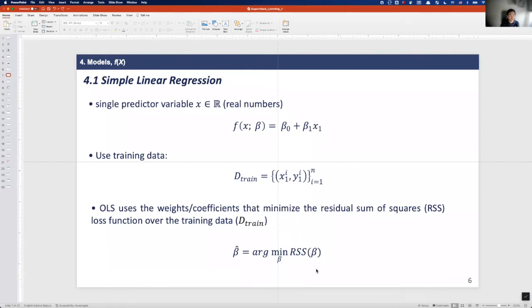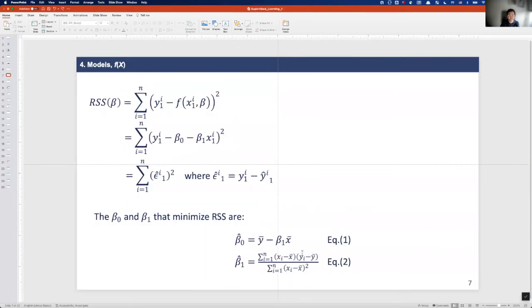This equation indicates finding the minimum value of the beta which minimizes the RSS. The parameters that minimize the residual sum of square, RSS, the loss function over the training data, can be calculated based on these equations, equation 1 and 2. It is easy to derive. So your first homework is to derive the equation.